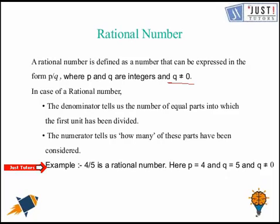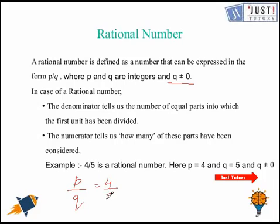For example, 4/5 is a rational number, where p is 4, or the numerator is 4, and q, or denominator is 5, and it is not equal to 0. So the main or the standard form of a rational number is always p over q, and here p over q is 4 over 5.